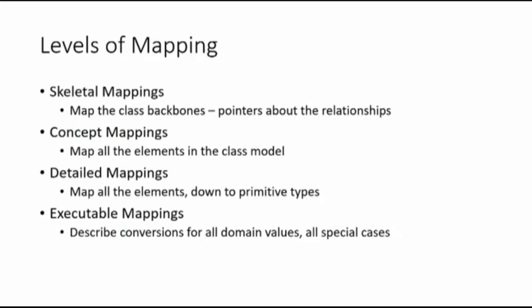Then you can say you're going to do detailed mappings — going all the way down to the primitive types, checking all the data contents, mapping the domain values. And finally, executable mappings: you write the relationship between the two content models in such detail that you've accounted for every possible domain value in the source graph, all special cases, all the tricky if-this-then-that rules. You can give it to an engine with source data and say, give me some output. The amount of information you need grows by an order of magnitude as you move down this cascade.